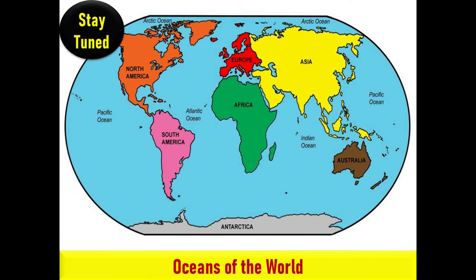The phrases 'the ocean' or 'the sea', used without specification, refer to the interconnected body of salt water covering the majority of the Earth's surface. As a general term, the ocean is mostly interchangeable with the sea in American English, but not in British English. Strictly speaking, a sea is a body of water, generally a division of the world ocean, partly or fully enclosed by land. Around 71% of the Earth is covered in salt water. We call this major body of water the ocean.